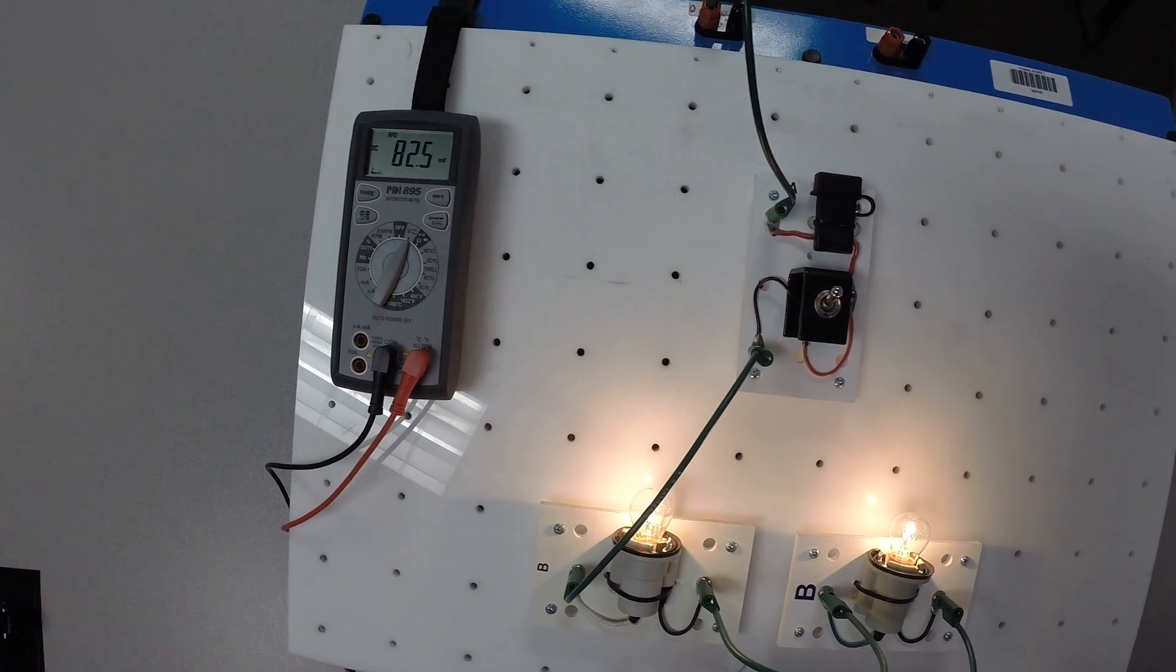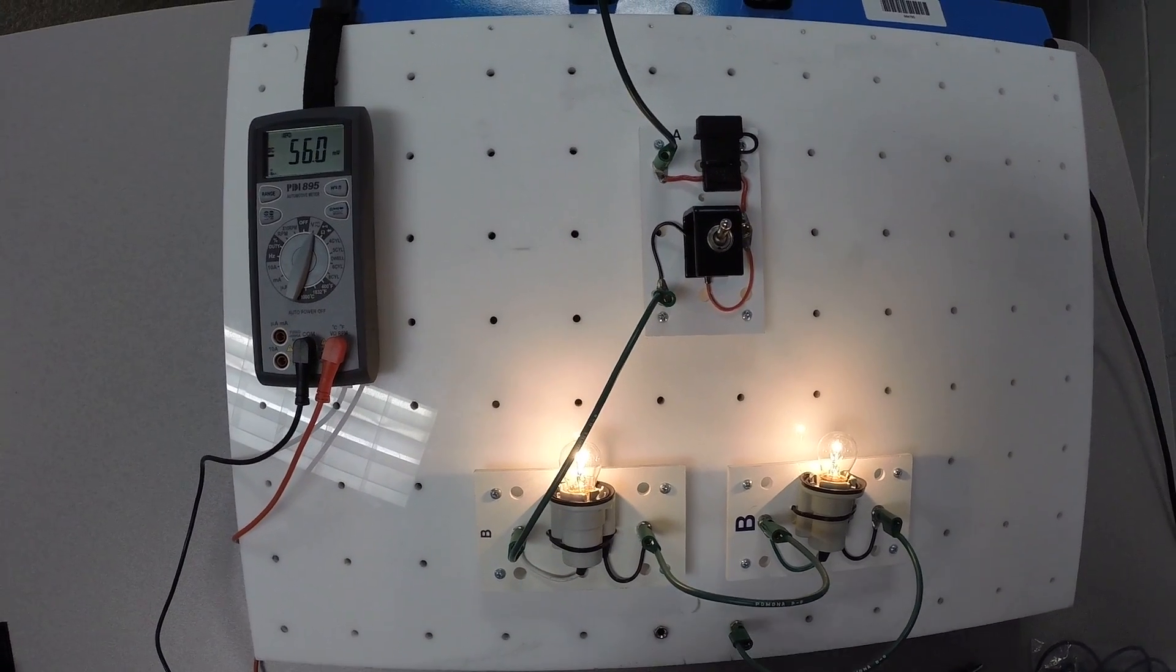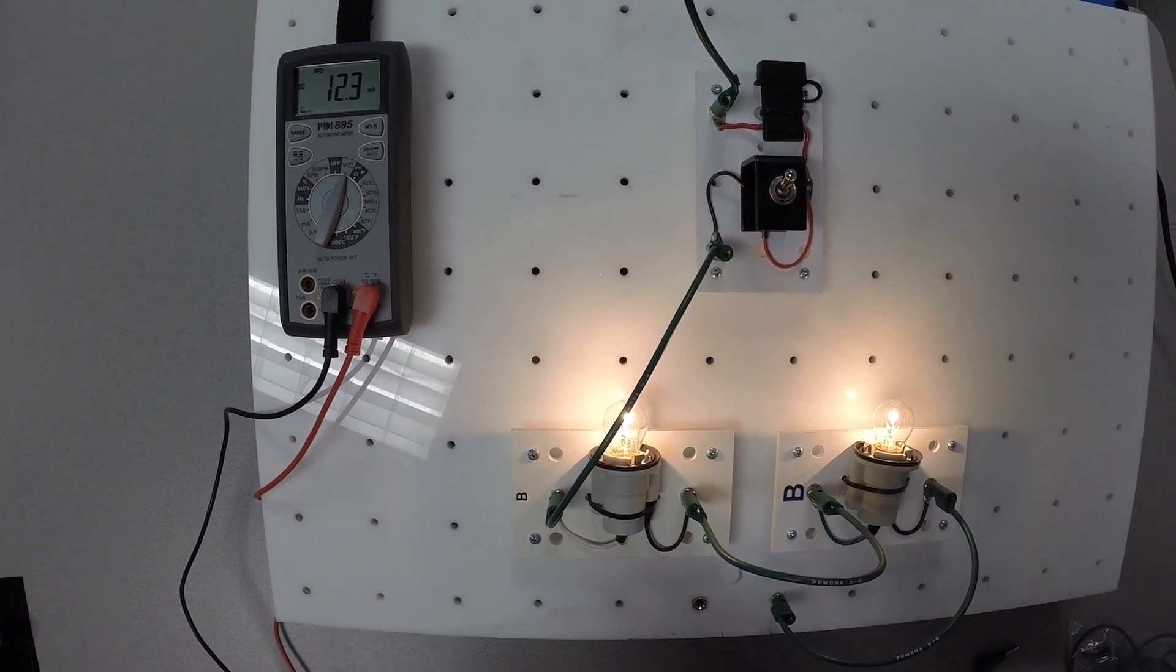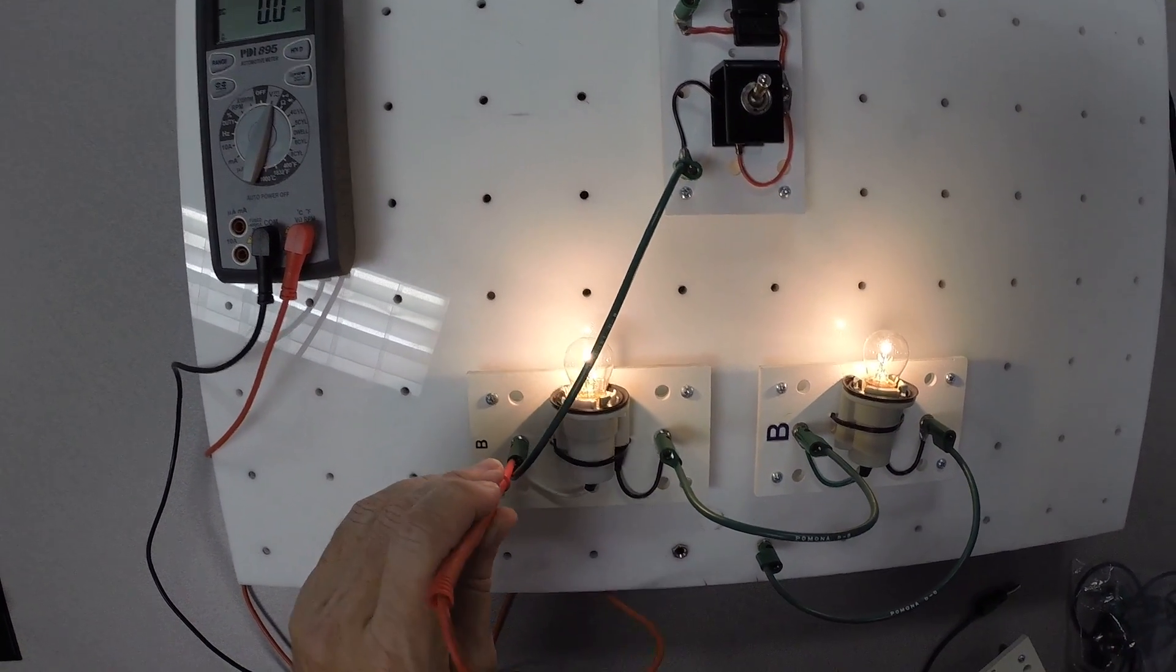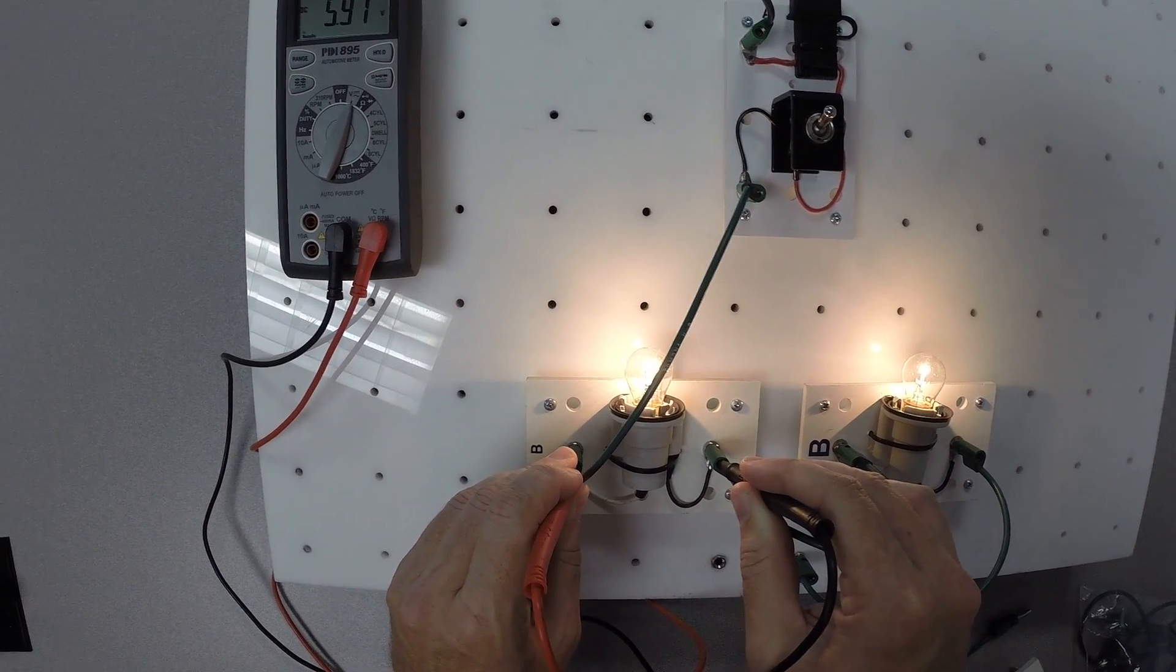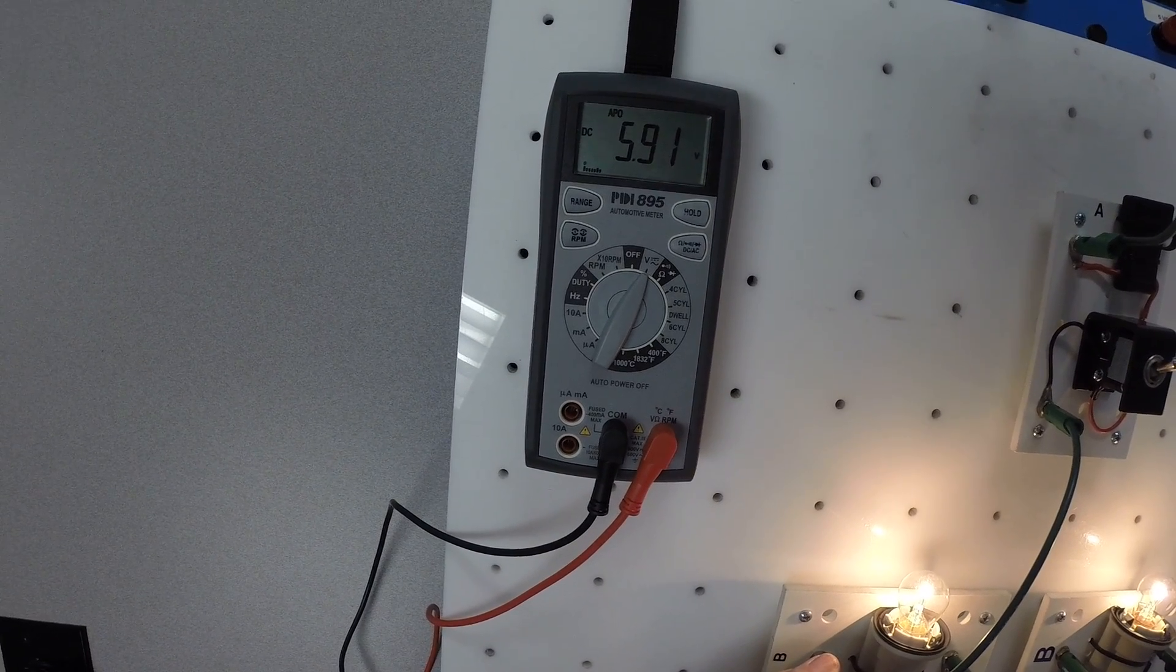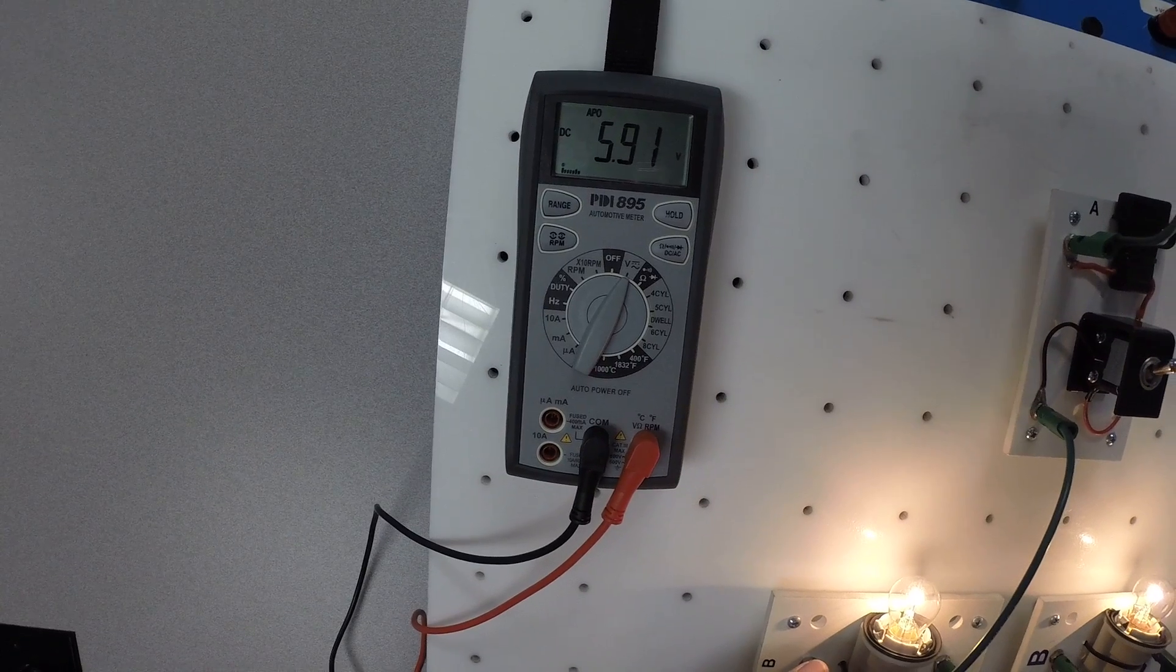Now, let's look at where the voltage is actually dropping because what we saw on the positive side and the negative side is hardly anything. And that's good. That's how it should be. So we're going to measure the voltage drop then across our loads. So I place one lead right here where we're going into the load. The other lead right here where we're coming out of this first load. And you can see we're dropping 5.9 volts.